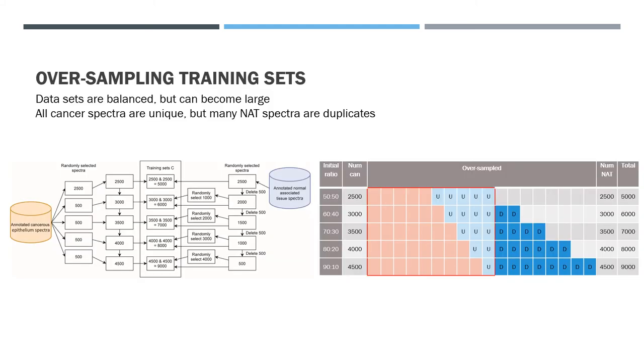Oversampling is a bit more complicated. The red box in the table on the right indicates the spectra that are unique. That includes all of the cancer spectra and the normal-associated spectra originally in the samples. In order to oversample, we randomly duplicate more and more of the normal associated, to keep up with the growing cancer set size. The dark blue squares labeled D represent duplicates, while the light blue squares represent the original spectra. As you can see, by the time we have a ratio of 9 to 1, we have 4500 cancer spectra, each of which being unique, but only 500 unique normal-associated spectra. From these 500, we now need to randomly select another 4000 spectra.